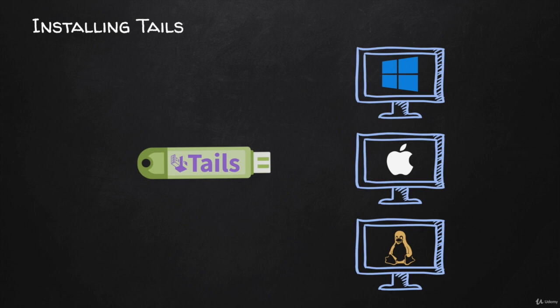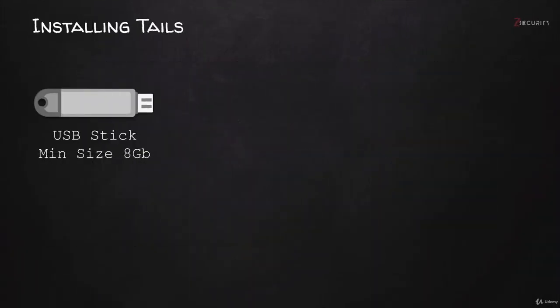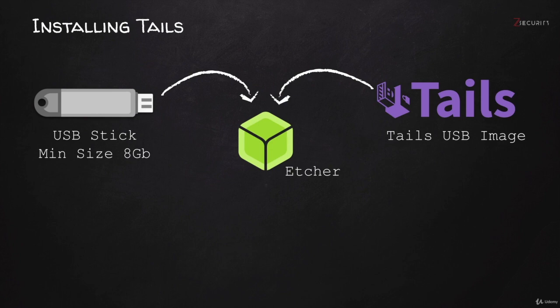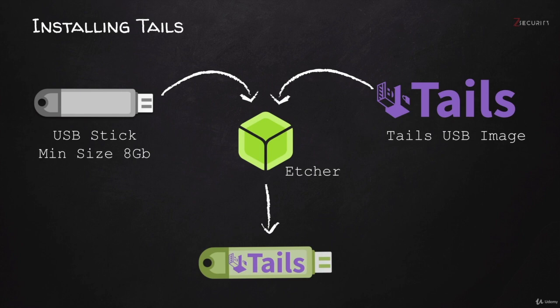In order to install Tails on a USB stick, the first requirement is a USB stick with a minimum size of 8 gigabytes. You'll also need the Tails image — I'm going to include its download link in the resources of this lecture. Finally, you'll need software to flash the Tails USB image to the USB stick in order to have a bootable USB stick with Tails on it, which you can then connect to any computer running any operating system.